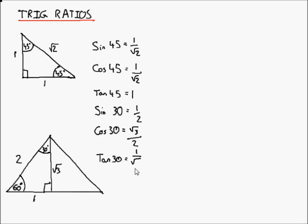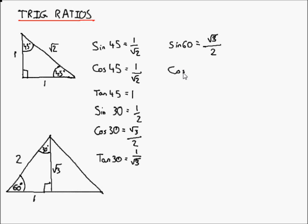Now that was only using the 30 degree angle — we've also got a 60 degree angle in this triangle. Sine of 60 equals opposite over hypotenuse, which is root 3 over 2. Cosine of 60 equals one half. Tan of 60 equals root 3.